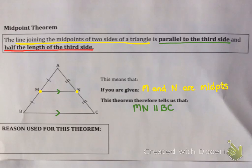Now it also tells you a second thing. The midpoint theorem also says that MN will be a half of BC. So this line which is parallel is a half of the third side of the triangle.